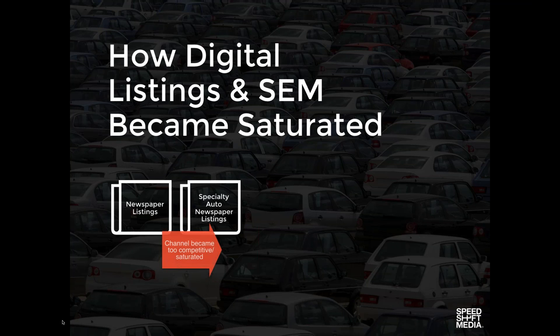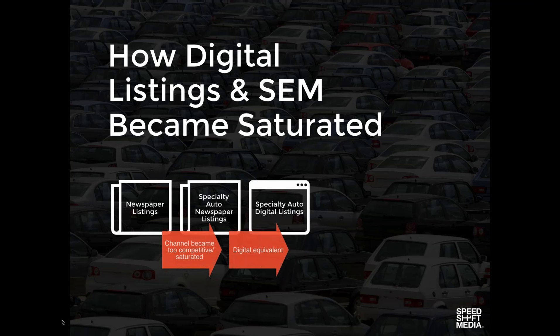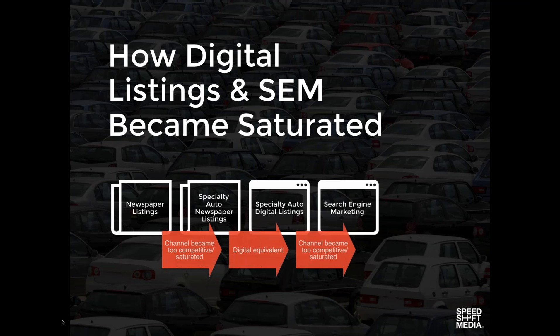The poll results are spread across the spectrum. The leading vote getter was digital listings at 36%, followed closely by SEM at 29%. Social media received 18%, display 11%, and email 7%. So digital listings was the leading vote getter at 36%, which is pretty consistent with what we see in the marketplace — digital listings and search engine marketing are the dominant forces.